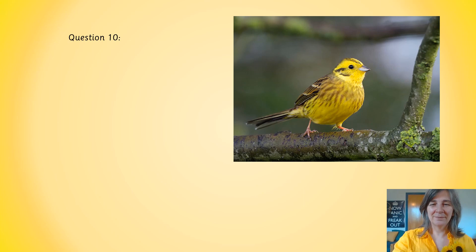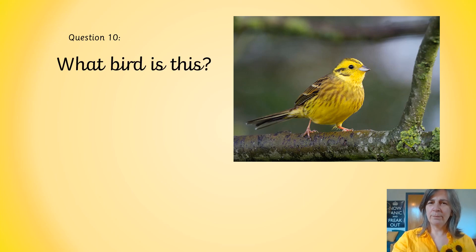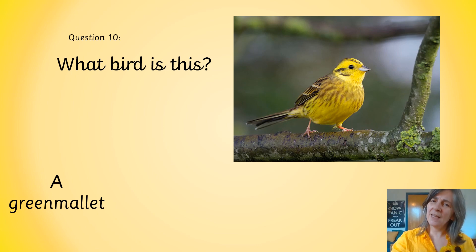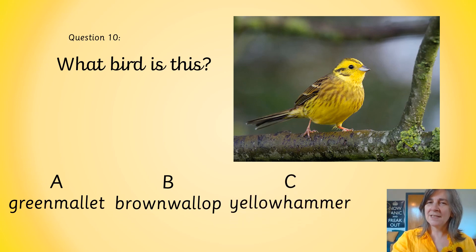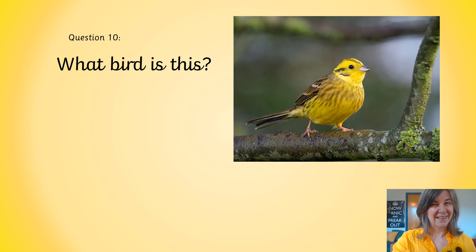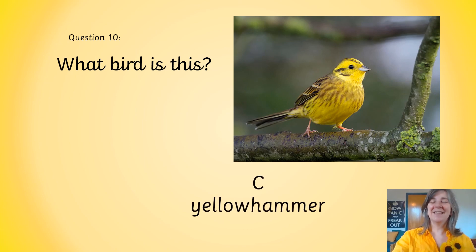Question 10. What bird is this? Is it a, a green mallet? Is it b, a brown wallop? Or is it c, a yellow hammer? That is a tricky one. What do you think? It's c, a yellow hammer.